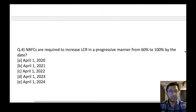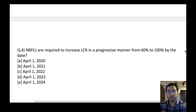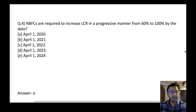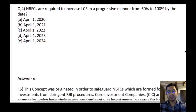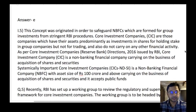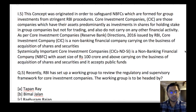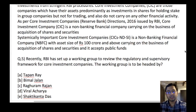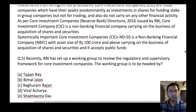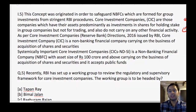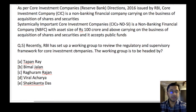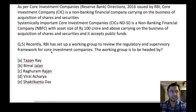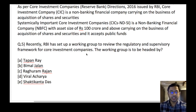NBFCs are required to increase LCR — Liquidity Coverage Ratio — in a progressive manner from 60% to 100% by which date? The answer is April 1, 2024. Next: RBI has set up a working group to review the regulatory and supervisory framework for Core Investment Companies (CICs). Please go through this paragraph as it provides a lot of information about CICs. The working group is to be headed by — the answer is A — Tapan Ray.